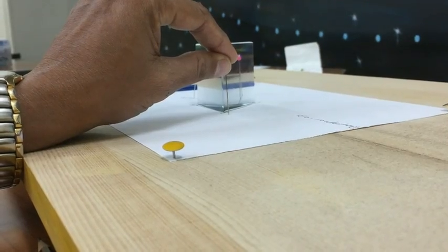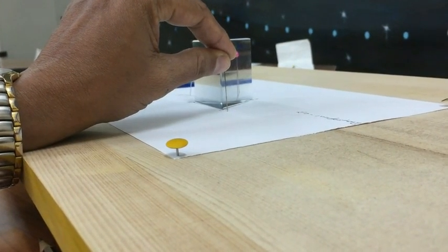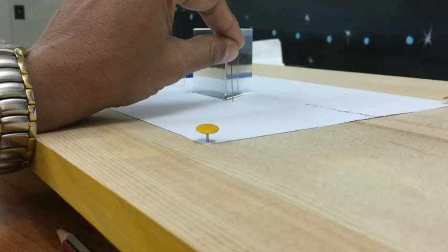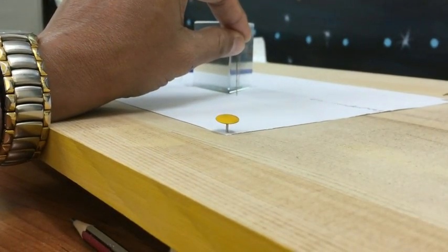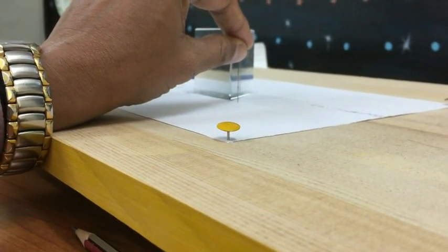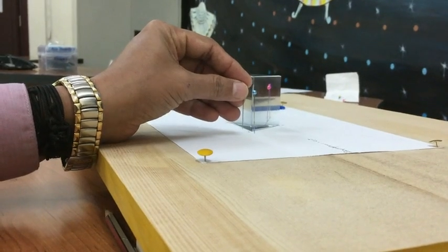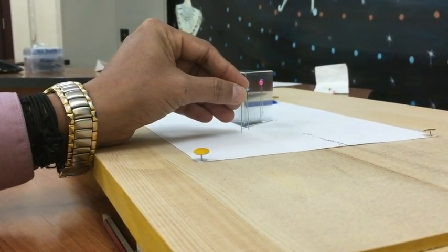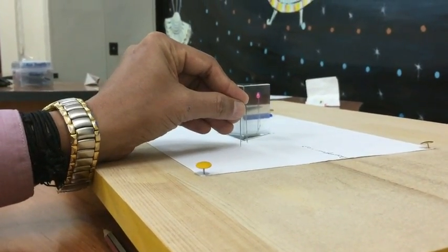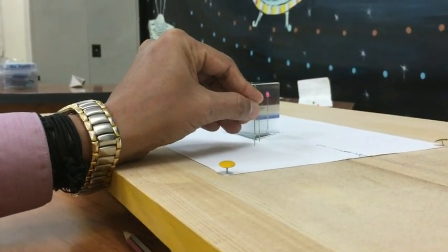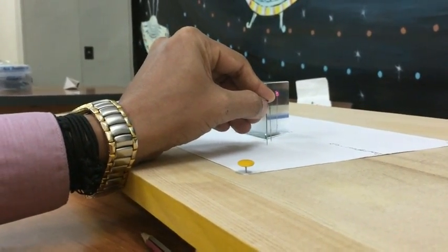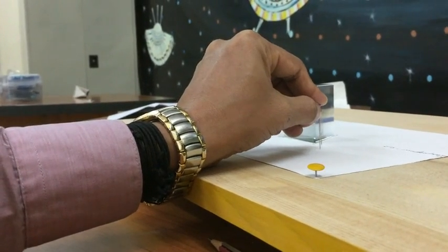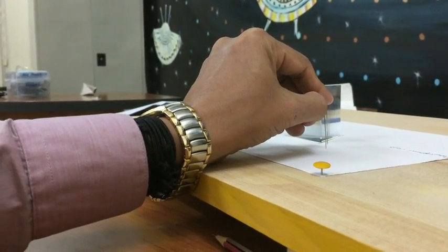Now fix the third pin in such a way that it aligns itself with the two images of the pins that you see along the face of the prism. Take the fourth pin in such a way that it aligns itself with the two images visible from the face of the prism and the third pin, so that all the pins appear to fall in a single straight line.